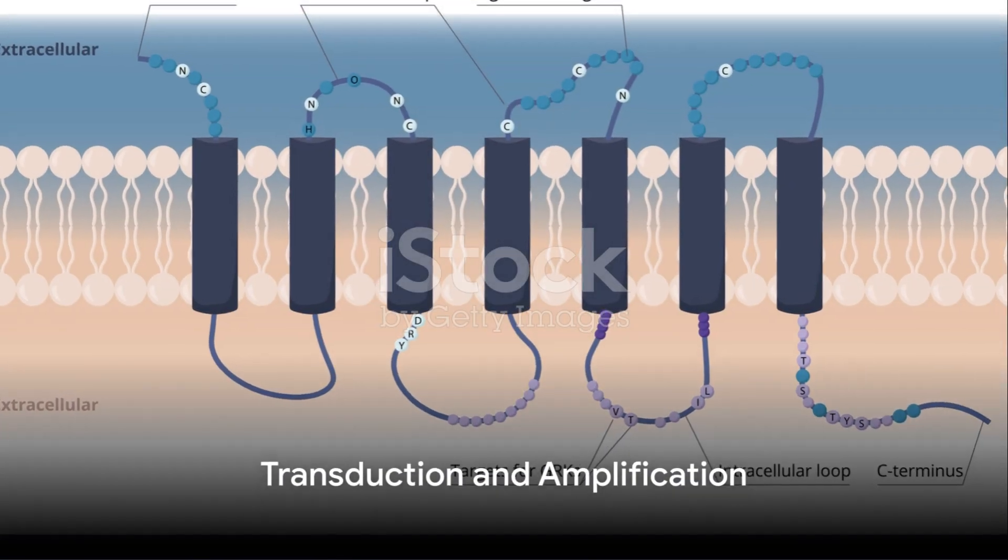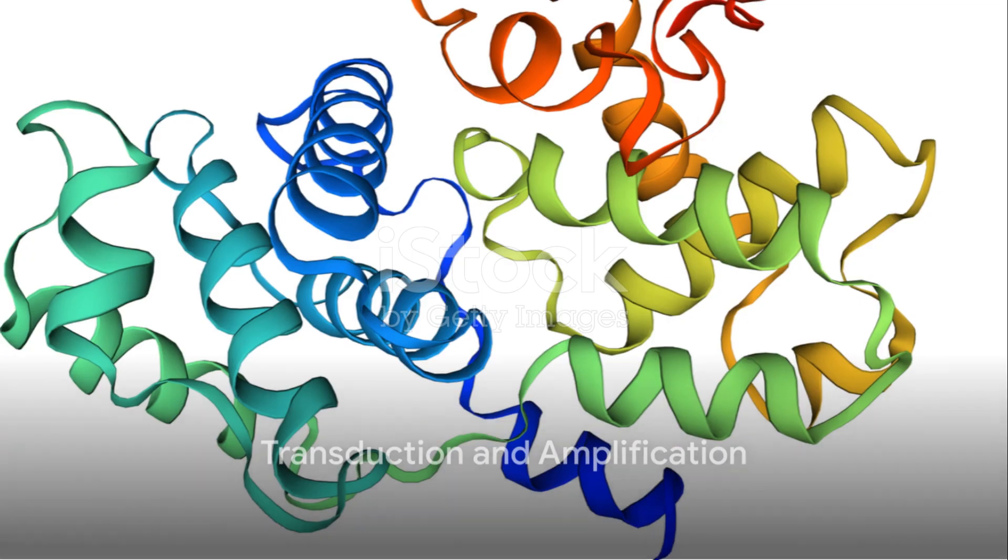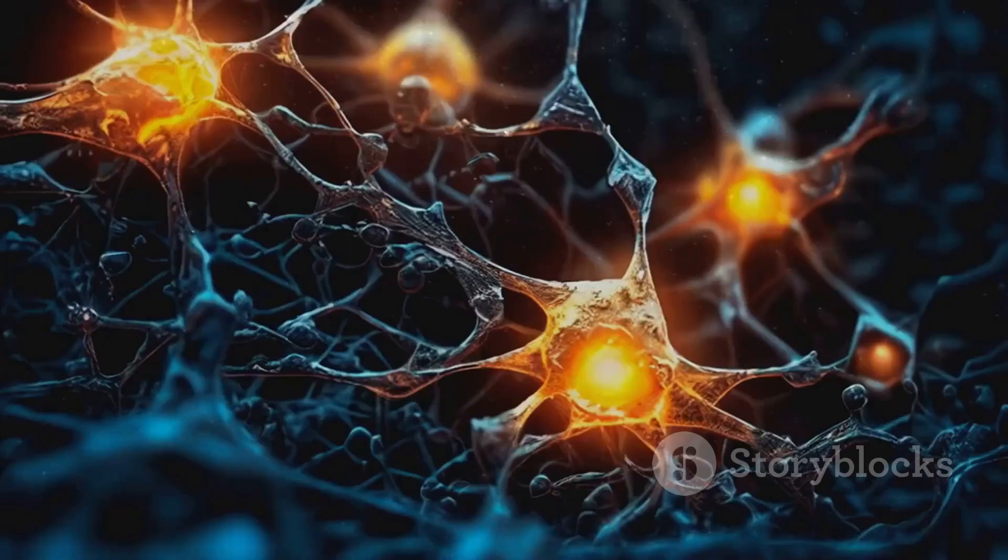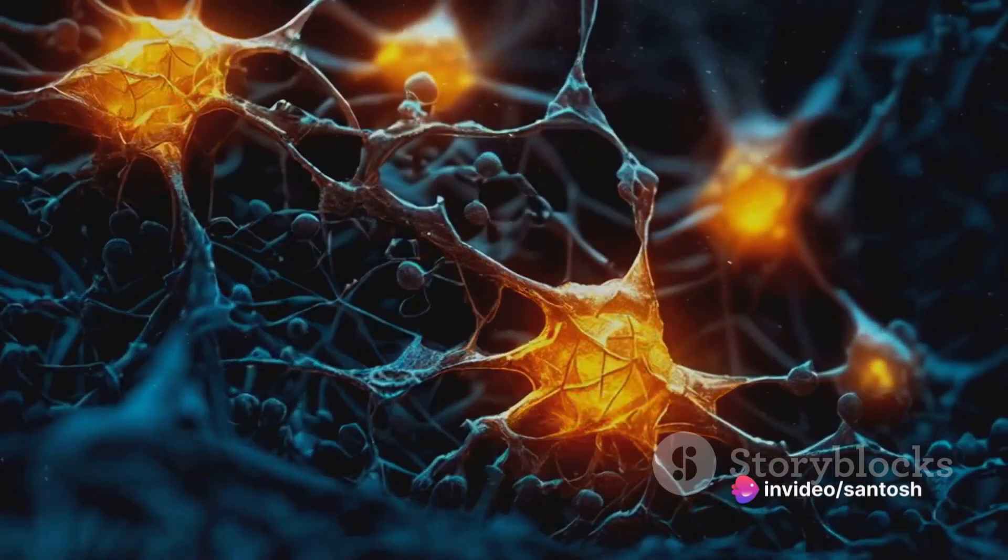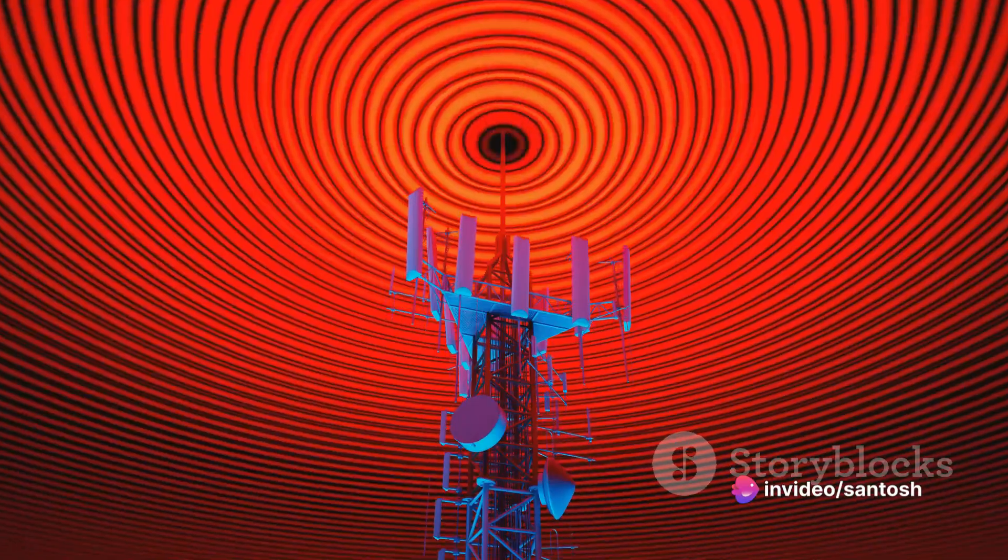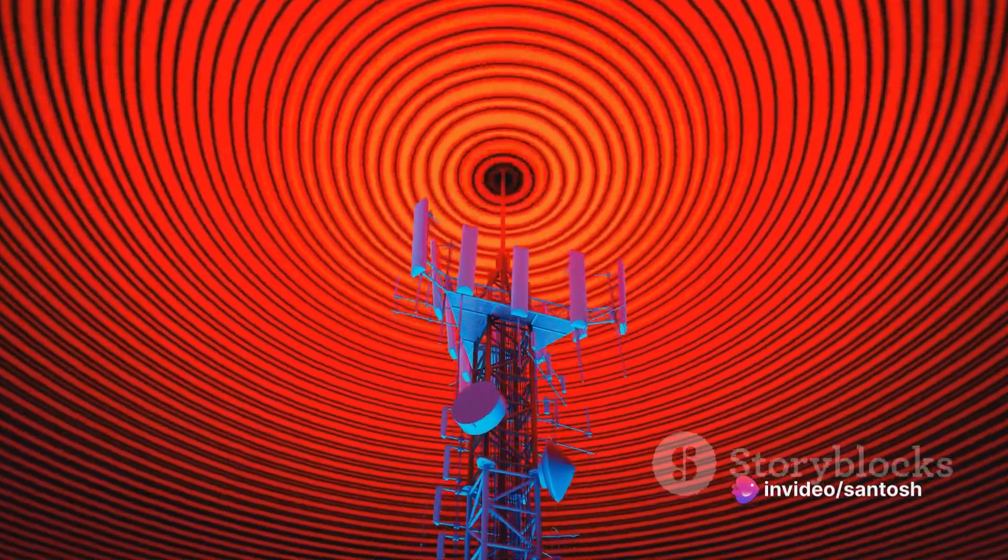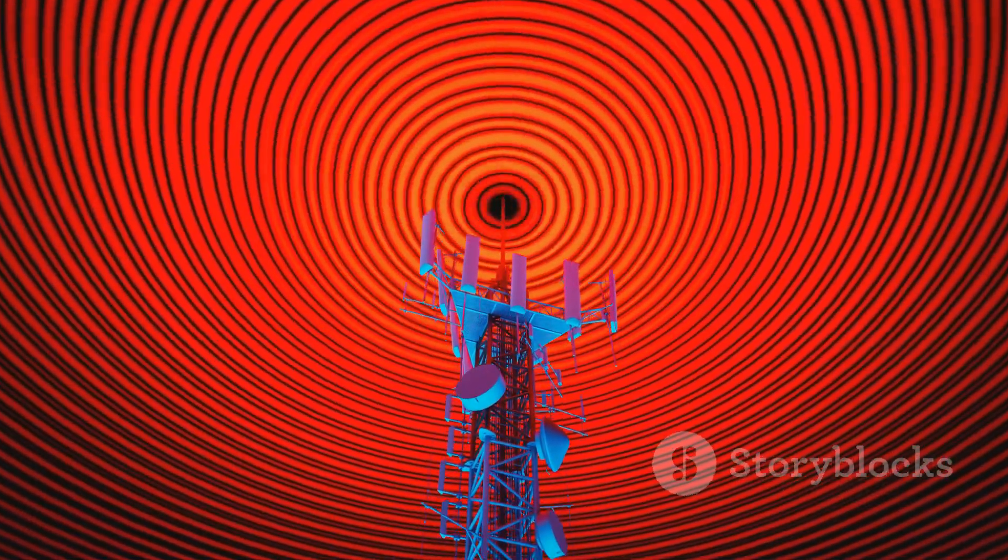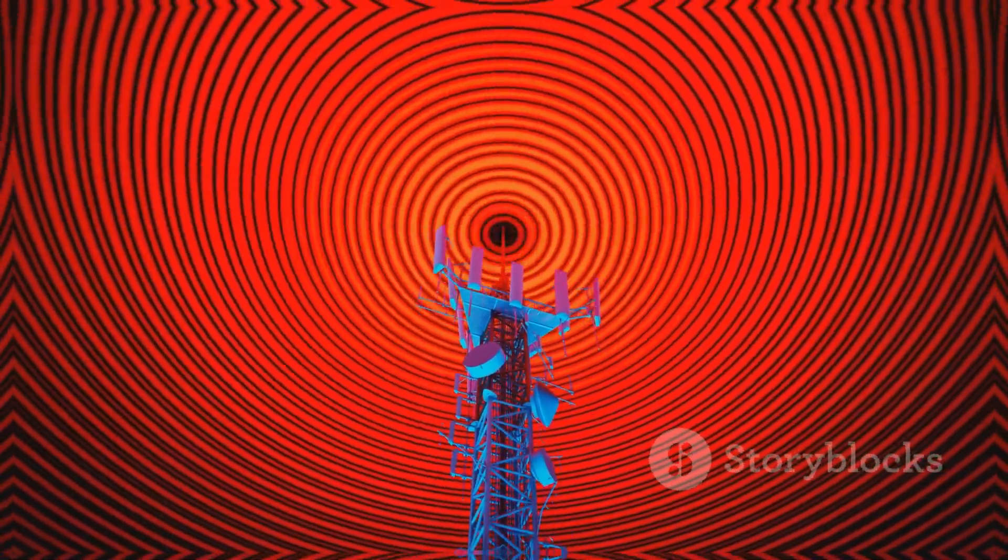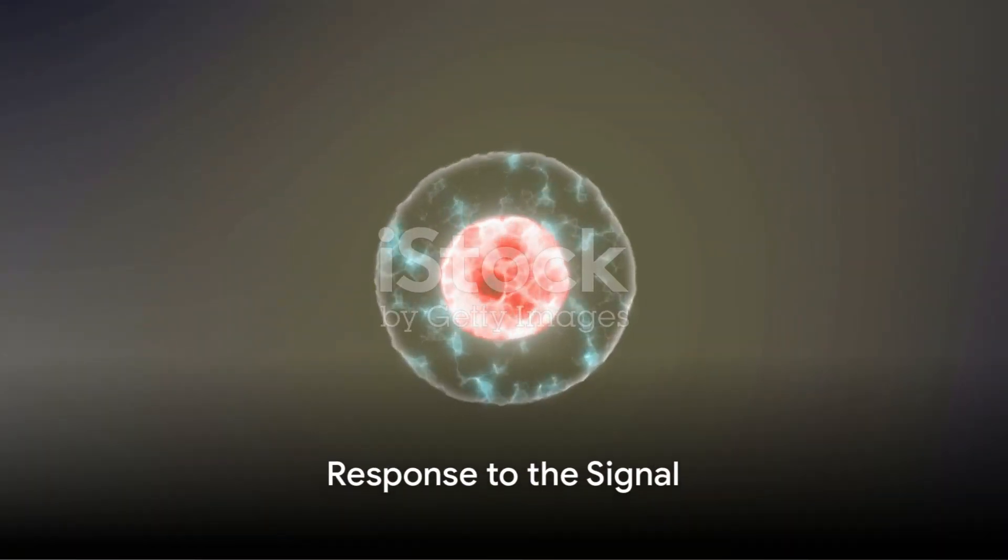This binding triggers a sequence of changes in the cell. An array of proteins within the cell act like dominoes, each one activating the next in a cascade. This process, known as transduction, amplifies the signal, making it stronger, ensuring that the message is heard loud and clear. The final step is the response.